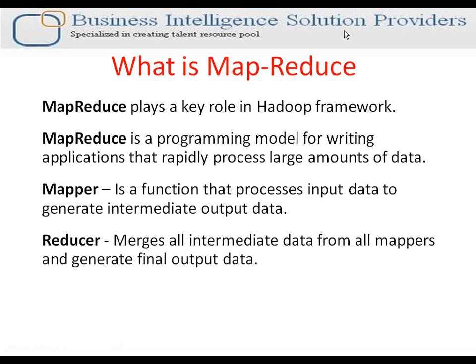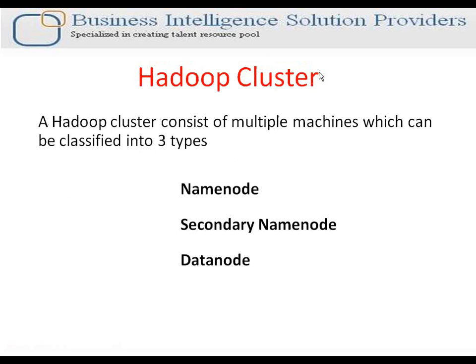Next is Hadoop cluster. In a Hadoop cluster we may have any number of machines — two, ten, twenty, anything. As far as the type of machines is concerned, we have the master machine, the Name Node, of which there is only one; the Secondary Name Node, which is the backup of the master; and Data Nodes, which are the slave machines. So in a particular Hadoop cluster we have one Name Node, one Secondary Name Node, and multiple Data Nodes.